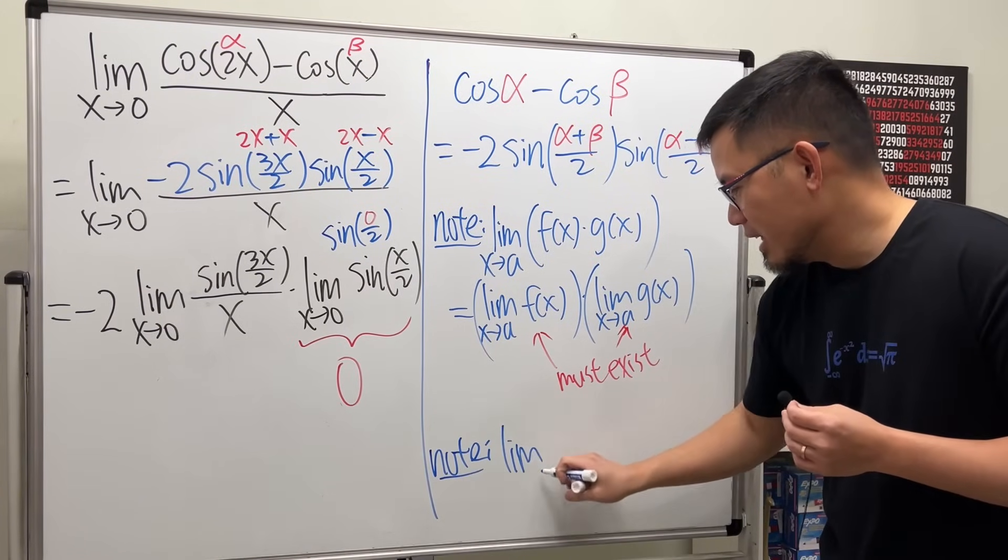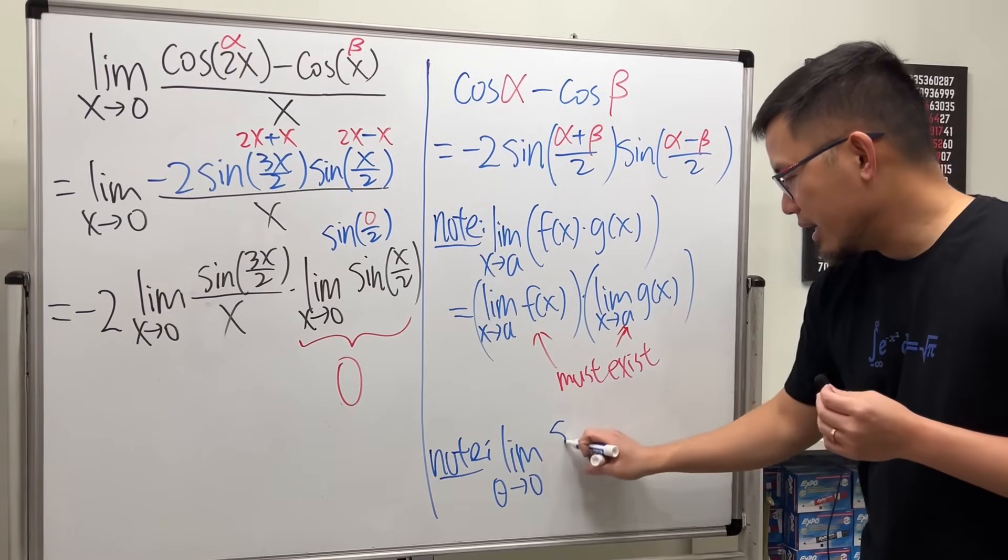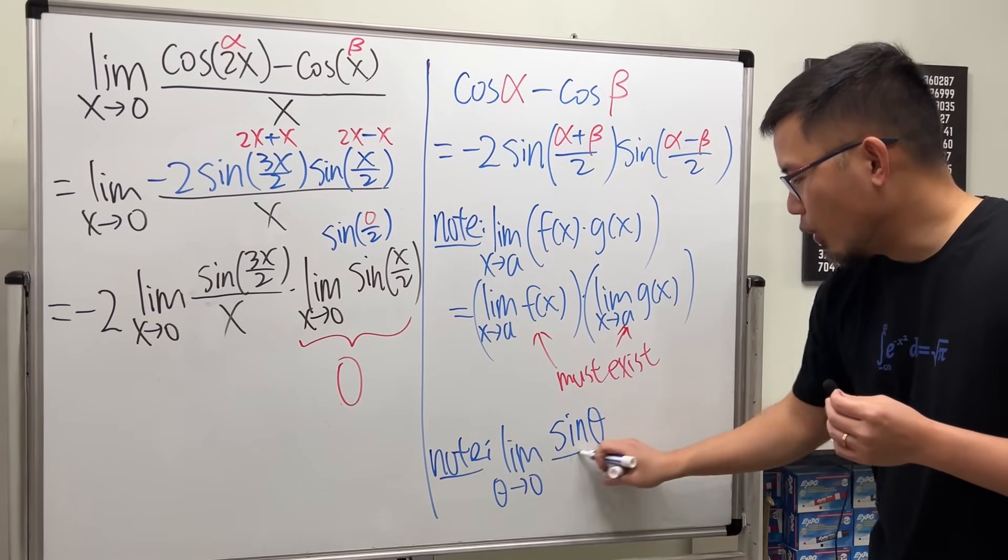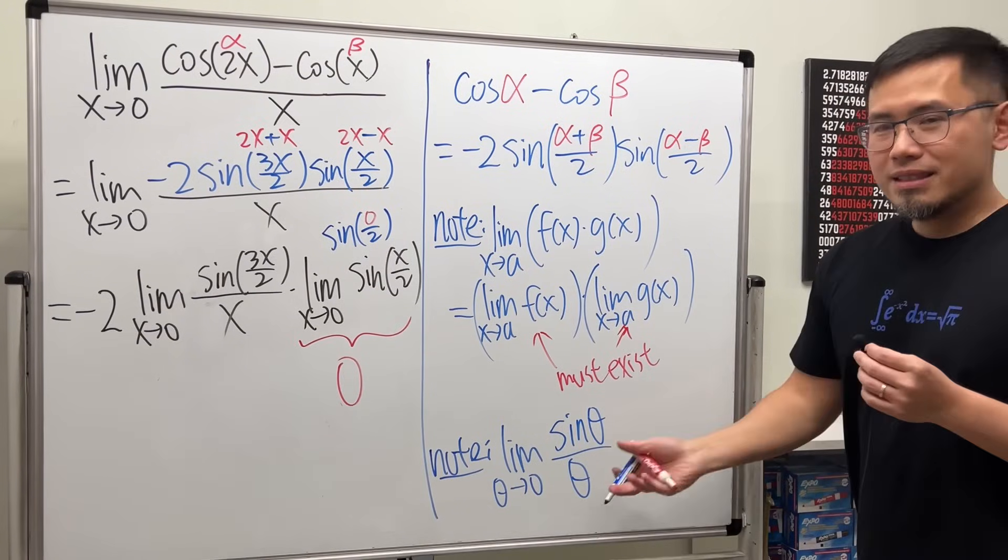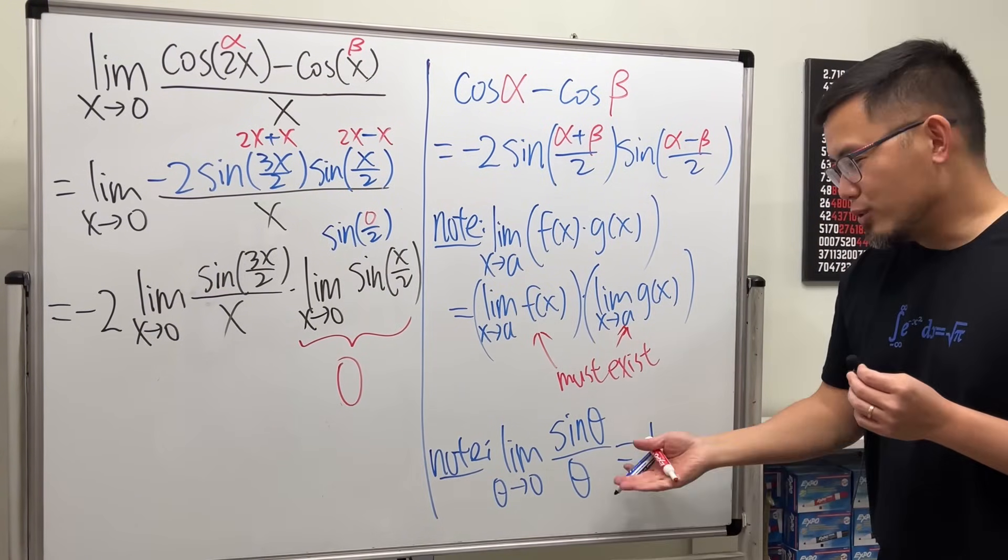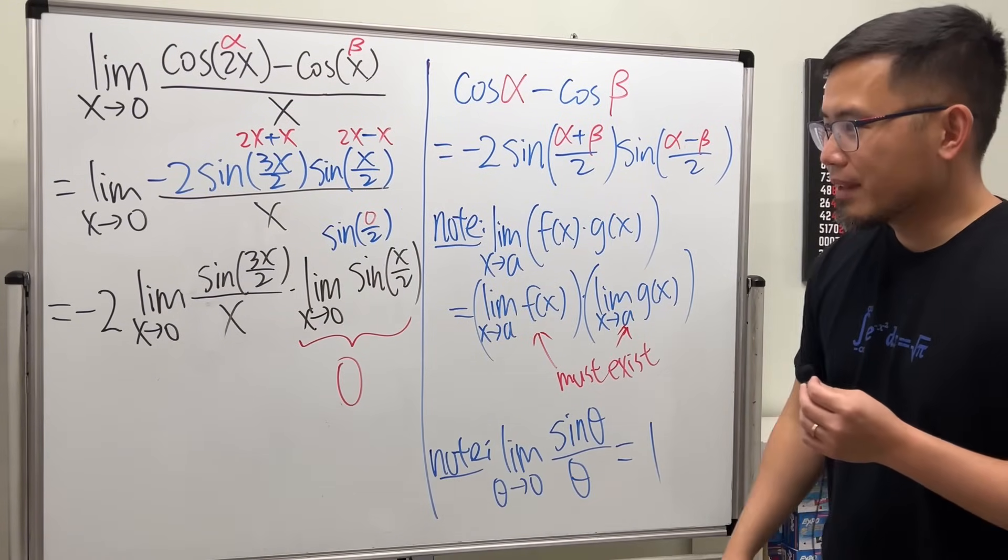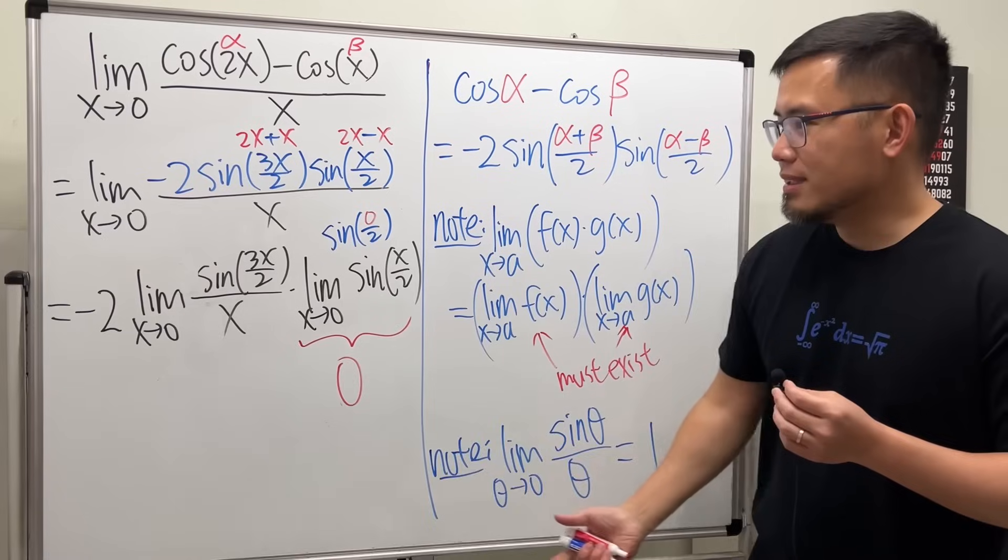So how can we figure this out? Well, here is another note. This is the limit. If we have an angle theta approaching zero, and here if we have sine theta over theta, this right here is a standard result. We will just get 1. You can do a geometry proof on this, but please do not use L'Hôpital's rule for this. So how can we use this to figure this out? Check this out.